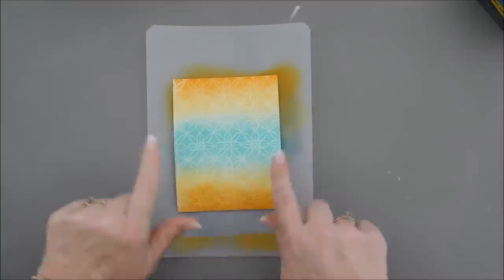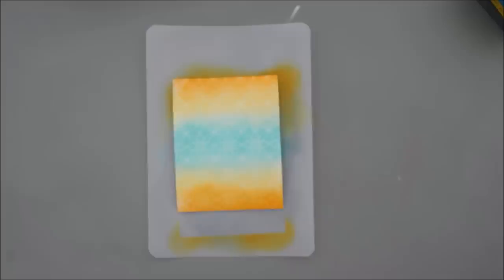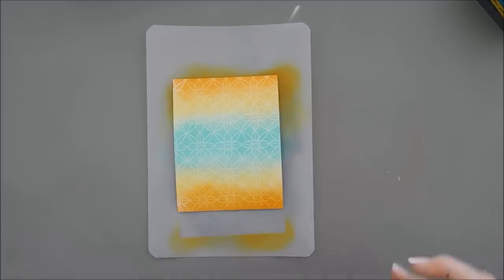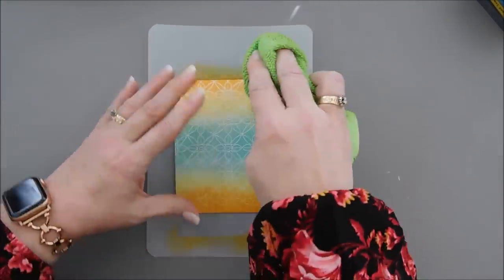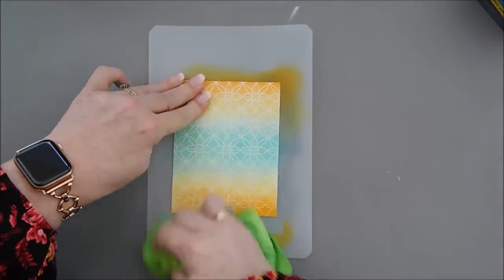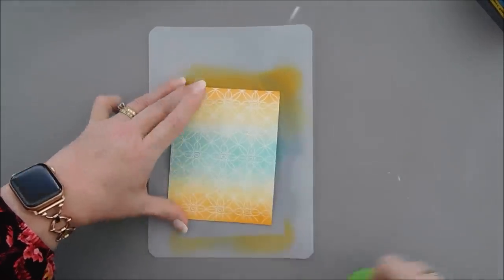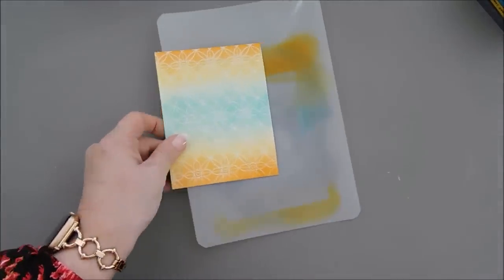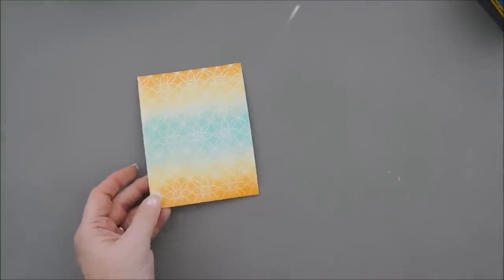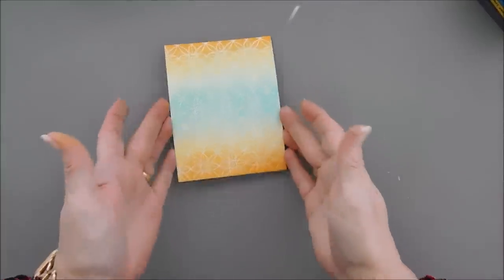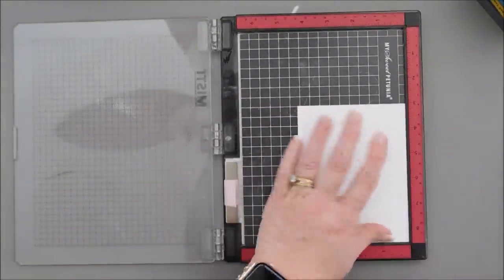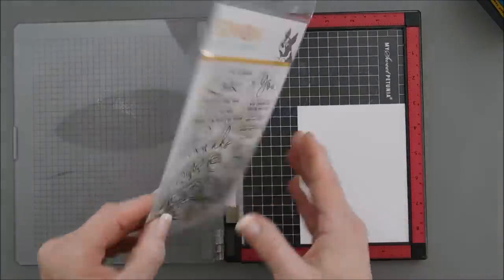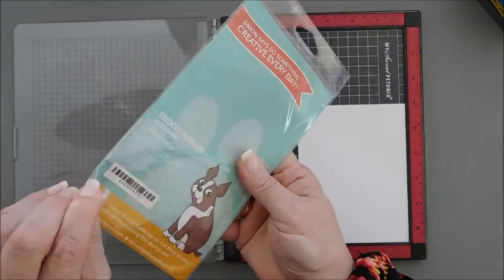And then I'm going to use a towel and I'm going to buff away the excess ink that is on my background here. So my background panel is done. Now I'm going to bring back my stamping positioner and we're going to do our stamping, we're going to stamp our flowers here. So let's take our swoopy flowers.